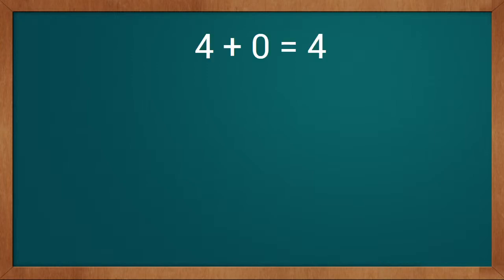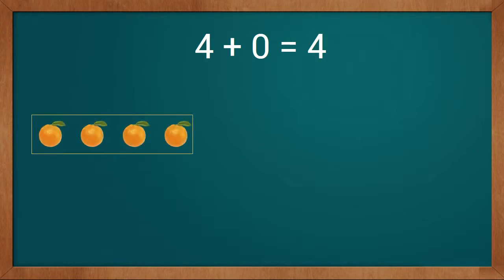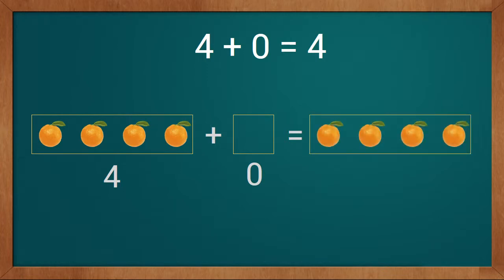Now we will see it with the help of an example. Our first problem is 4 plus 0 equals 4. We will take 4 oranges — our first value is 4. Our second value is 0, so we take 0 oranges. We will add both and count together: 1, 2, 3, 4. We got 4 oranges as our answer. We added 0 oranges to 4 and got 4 oranges. When we add 0 to any number, we get the same number.